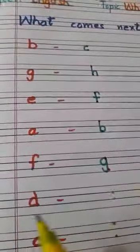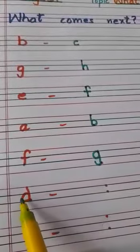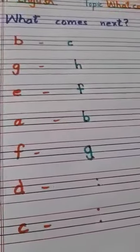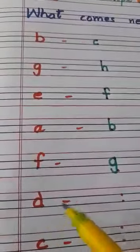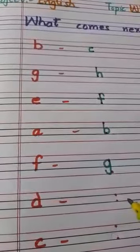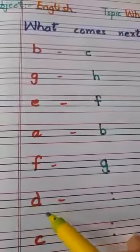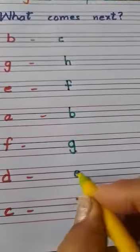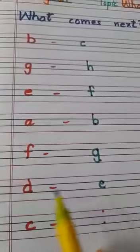Next is D. This is small letter D. What comes after D? We will speak: A, B, C, D, E. E will come after D. So we will write here — E. D, E.